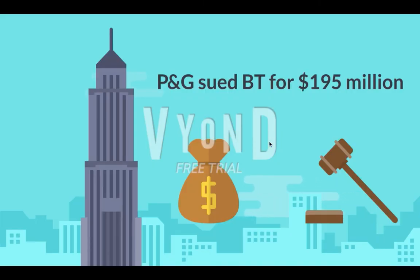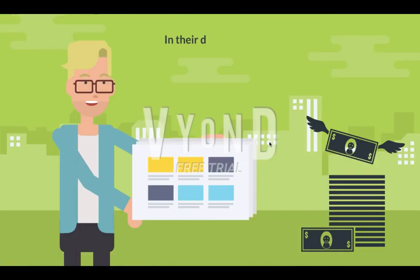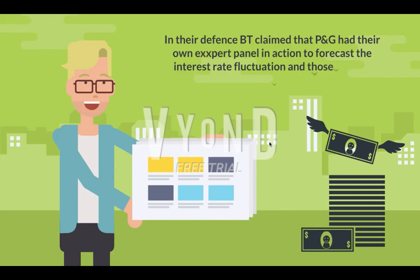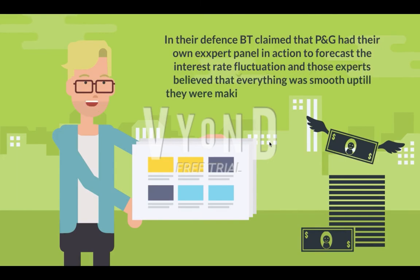P&G sued BT for 195 million dollars. In their defense, BT claimed that P&G had their own expert panel to forecast interest rate fluctuations, and those experts believed everything was smooth up until they were making handsome gains from those contracts.